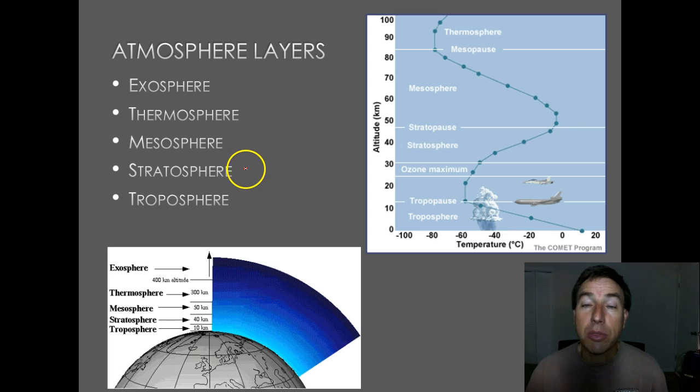The next two layers are the most important ones. The first is the stratosphere. The stratosphere is important because it holds that all-important ozone layer. We'll get into the ozone layer when we talk about climate change, but it's responsible for shielding the planet from harmful UV radiation that comes from the Sun.